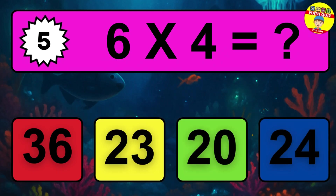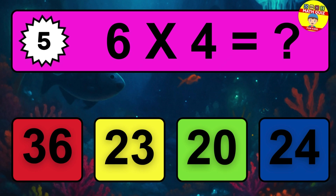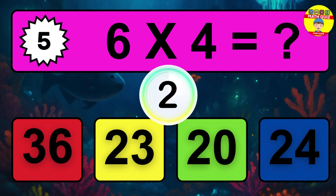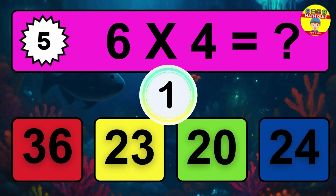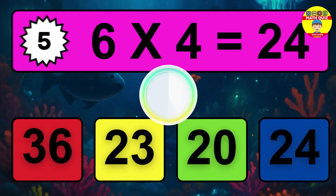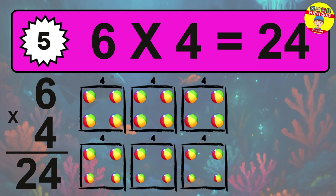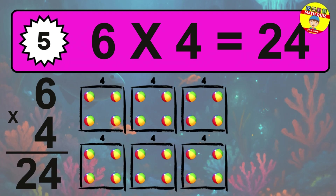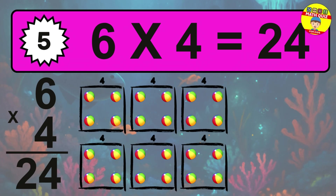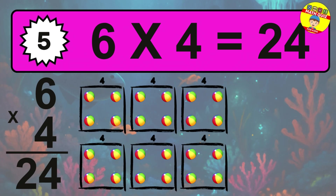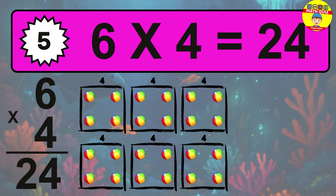Question 5. Six times four equals what? The answer is six times four is 24. To calculate, we have six groups with four balls each one. So how many balls do we have? Twenty-four balls.